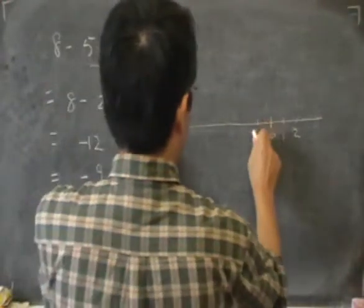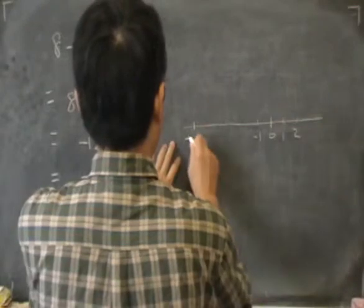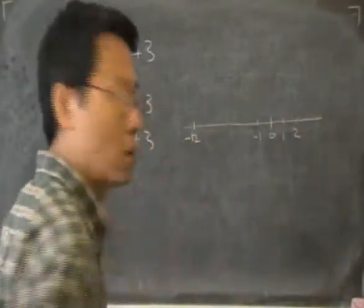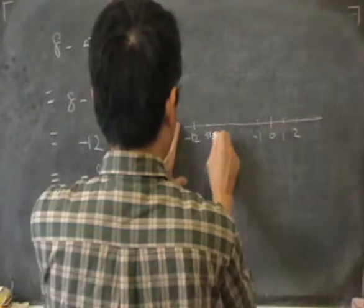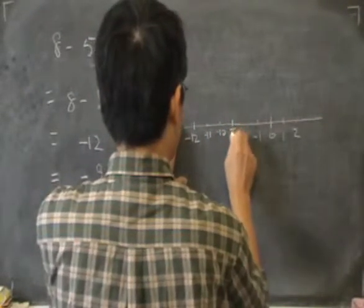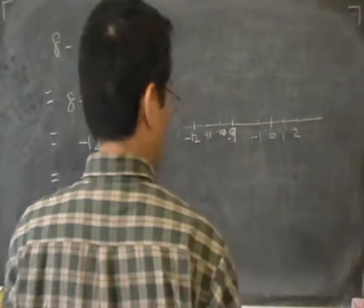And on the other side, I can have minus 1, minus 2, all the way until minus 12. And before minus 12, I have minus 11, minus 10, minus 9, and so on.